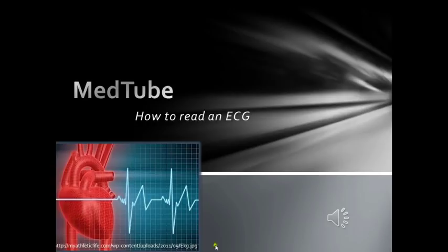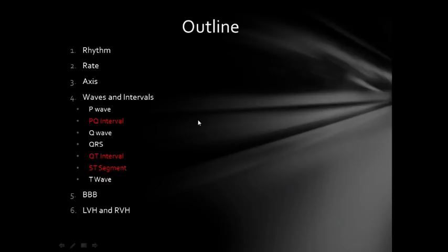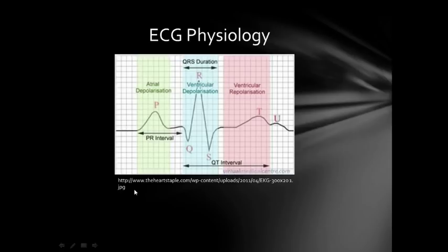Alright, so how to read an ECG — let's get started. This is the outline: we will be talking about the rhythm, the rate, the axis, the different waves and intervals of an ECG complex, then to conclude, bundle branch block, left ventricular hypertrophy, and right ventricular hypertrophy on an ECG. But before we start with the outline, let's revise the ECG physiology quickly.